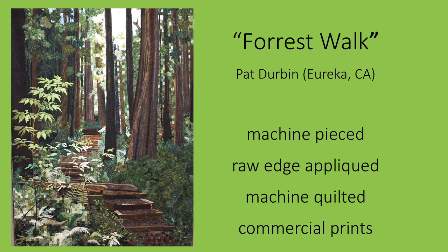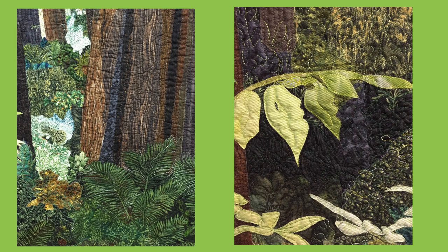Another quilter who is inspired by nature is Pat Durbin, who uses a range of techniques to recreate the woodlands. In this quilt, she has used machine piecing, raw edge appliqué, machine quilting, and images cut from commercially printed fabrics. In the left detail, notice the way Durbin has cut printed plants and appliquéd them on. Also note in the right detail how in other areas she has created branches of leaves using solid fabrics, adding even a hole in one leaf. Notice the various fabrics combined to recreate the tree trunks. Machine stitching ties it all together. This particular quilt is in the collection of the National Quilt Museum.